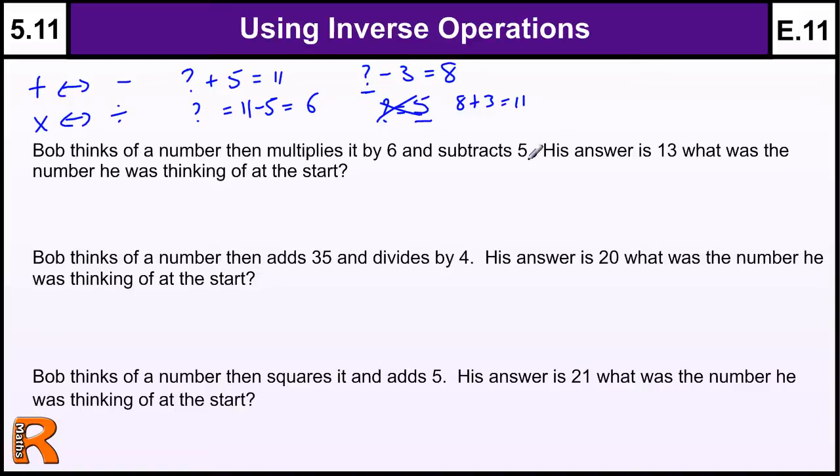11 take away 3 is 8. And two possibly new operations that are inverses: we've got squaring and square rooting. So if I said something squared is 25, to find that something I need to do the square root of 25, which is either 5 or minus 5. Now we very rarely use the minus 5 unless we're asked for two answers. We tend to just use the positive one.